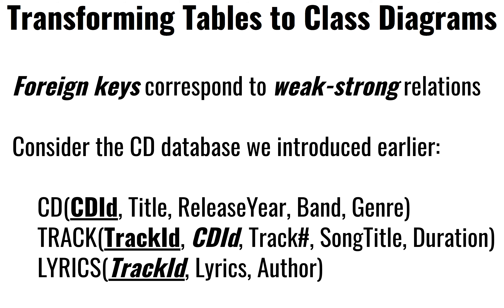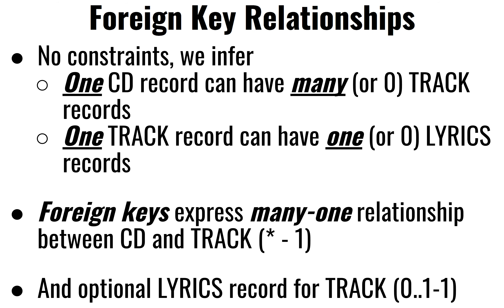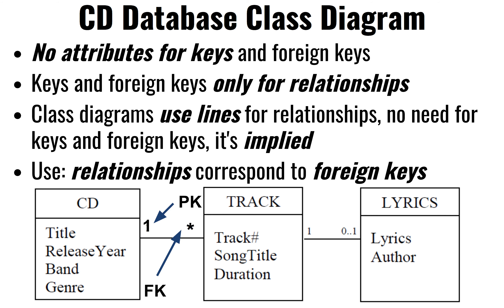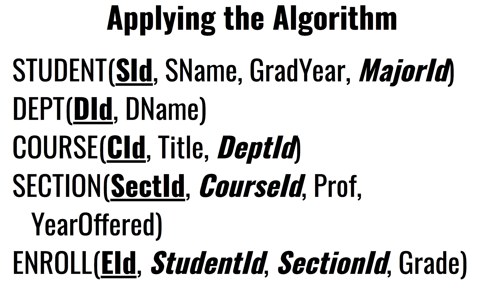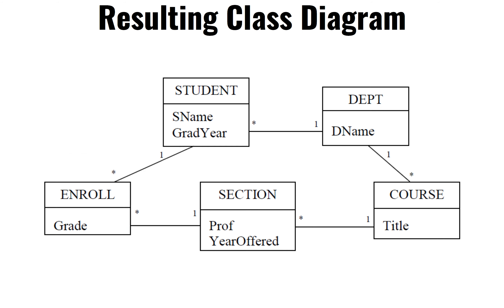So we took a look at a very simple example of tracks and CD tracks and lyrics, and we saw how we could go from a relational schema into a higher level class diagram. We tried to generalize that algorithm in three steps: creating one table per class, deciding depending on the cardinality on each side whether it was a one-to-many or zero-to-one, and then adding the attributes from the fields in the table as attributes in the class. We looked at this relational schema and after applying the algorithm, presumably we ended up with something like this.